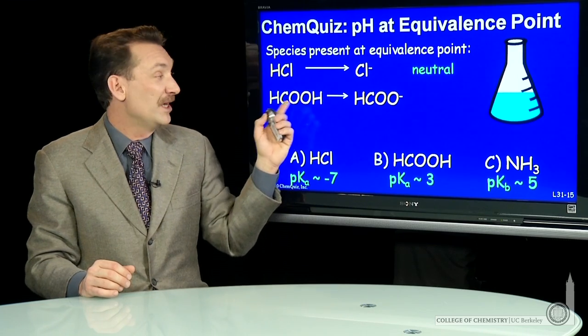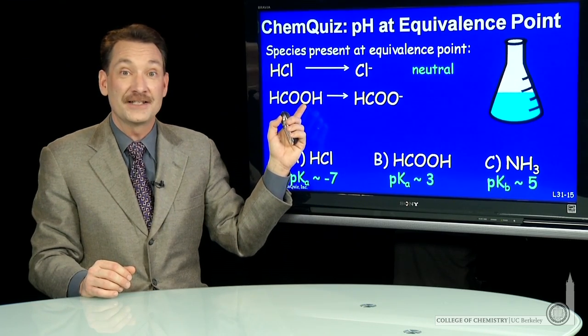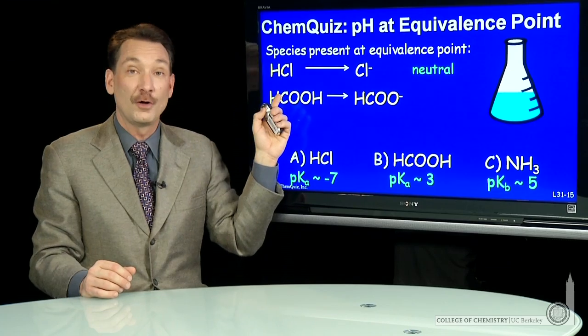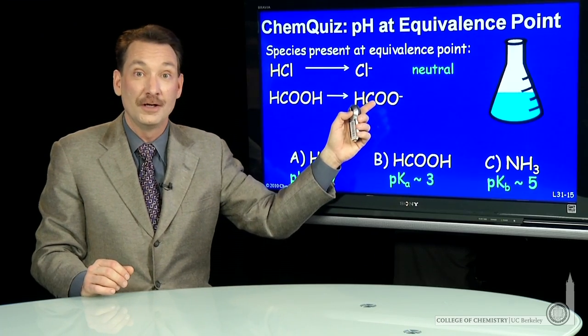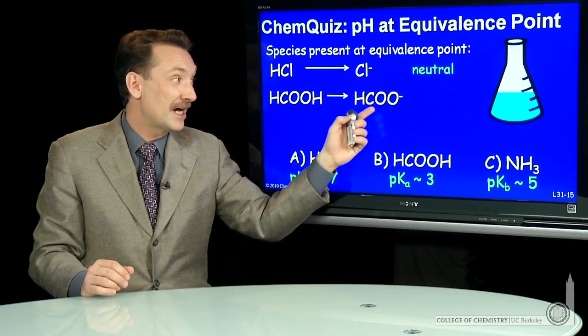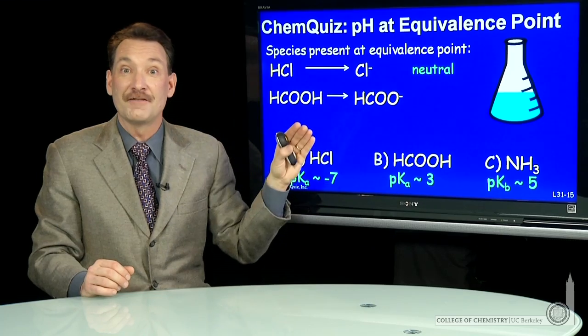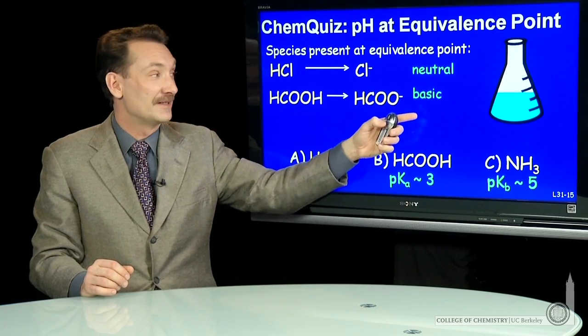Here's the weak acid formic acid. When I titrate that to equivalence point, I'll convert every mole of the acid into a mole of its conjugate base. And then the conjugate base will have an equilibrium, making the solution slightly basic.